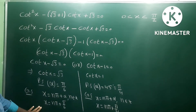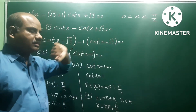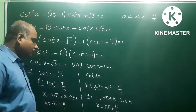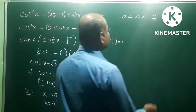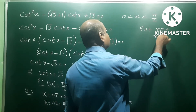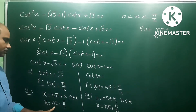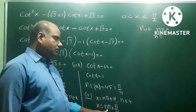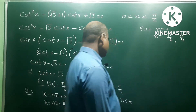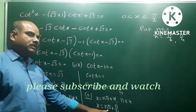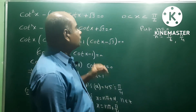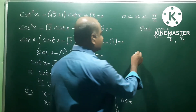Now consider different values of n within the interval 0 to π/2. We substitute only non-negative integer values for n. Putting n = 0, we get x = π/6 and x = π/4. When n = 1, x = π + π/6 and π + π/4, which fall outside the interval. Therefore the solution set is x = π/6 and x = π/4.